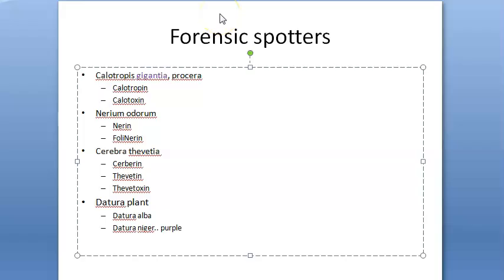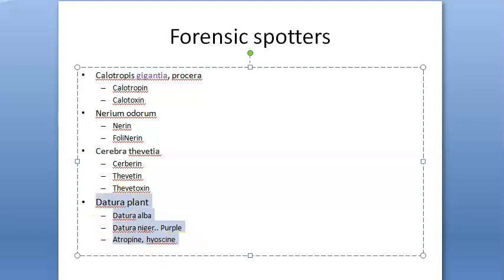The active principles of datura are hyoscine and traces of atropine — so write atropine and hyoscine. The medico-legal importance: it is used homicidally, suicidal use is rare, and it is used in accidental poisoning, criminal abortion, and as an aphrodisiac. Importantly, it is used as a stupefying agent to facilitate theft, rape, robbery, and kidnapping.